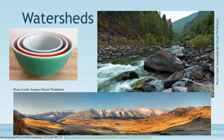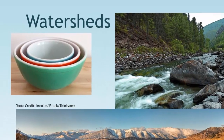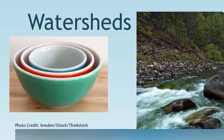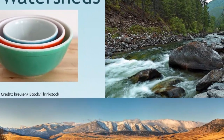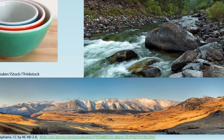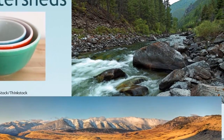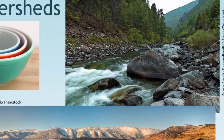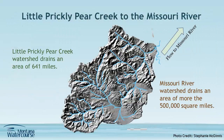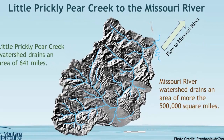Watersheds can be very big or they can be very small. They are nested within each other, sort of like a set of mixing bowls where the smaller one fits within the larger ones. For example, Montana is a headwaters to the Mississippi watershed. The Mississippi watershed area drains over one million square miles in the United States. However, the headwater streams that drain into the Mississippi can be very small and are nested within that larger watershed.